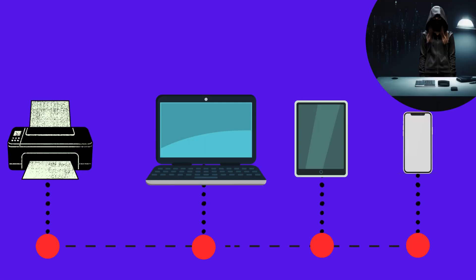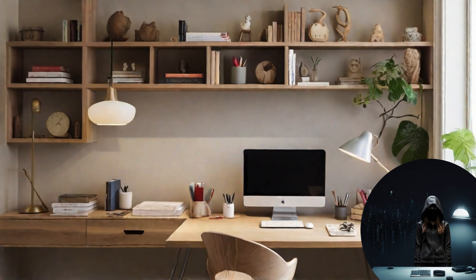At home, the devices connected to your network might be your laptop, cell phones, and smart devices, like your refrigerator or air conditioner. In an office, devices like workstations, printers, and servers all connect to the network.